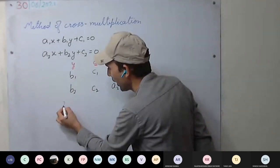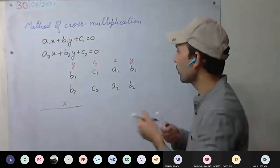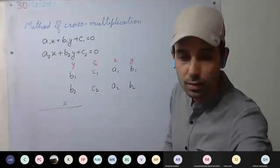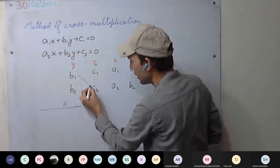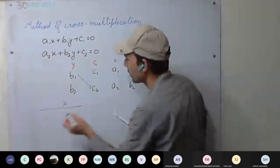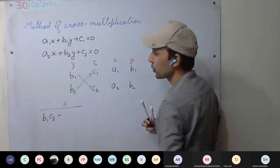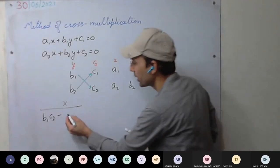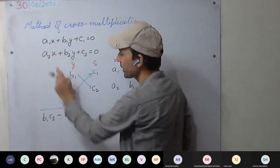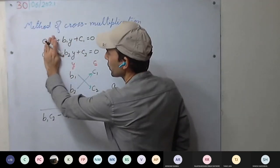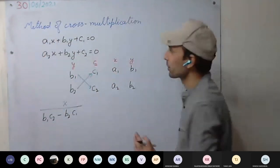The next step is to find x divided by its denominator. To find the denominator of x, we forget about the x terms and start from y. We take the cross multiplication: b1 times c2 minus b2 times c1. So x is divided by b1c2 minus b2c1.